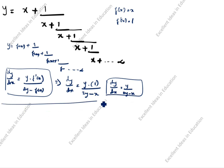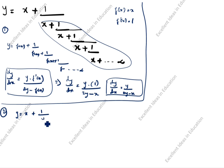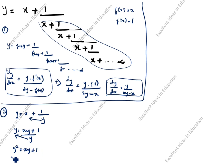Now we will verify using the differentiation method. y = x + 1/y, so cross-multiplying: y² = xy + 1. Differentiating both sides with respect to x gives 2y·dy/dx on the left.